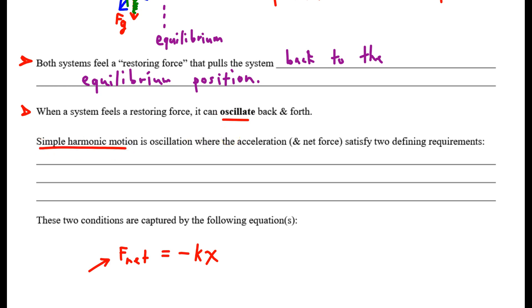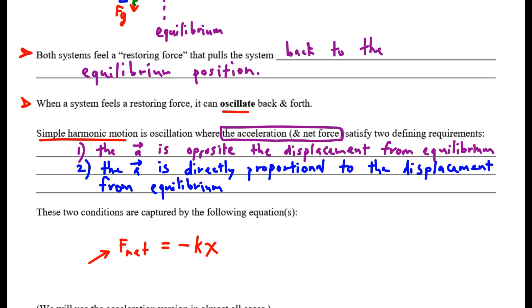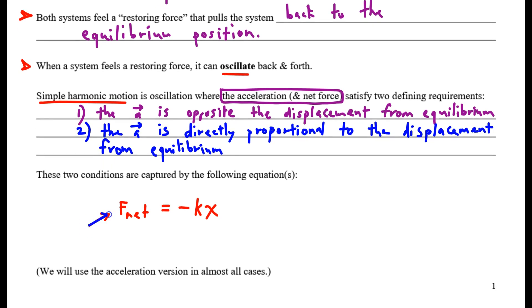It's when the oscillation is characterized by the following property. The acceleration and net force satisfy two requirements. First, the acceleration is opposite the displacement from equilibrium. And two, the acceleration is directly proportional to the displacement from equilibrium. Again, the way we satisfy these conditions is by making the net force equal to the restoring force.